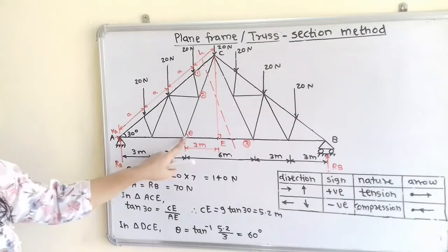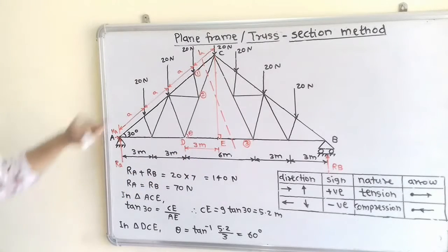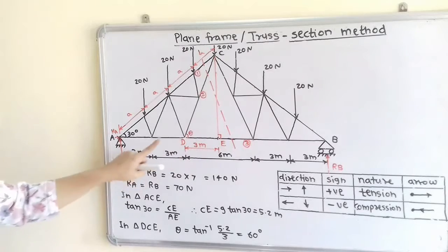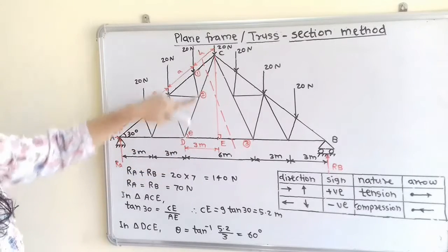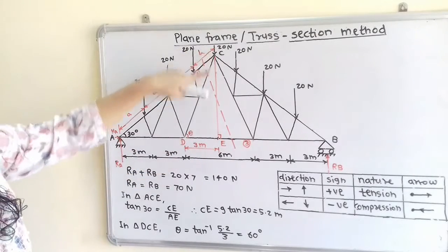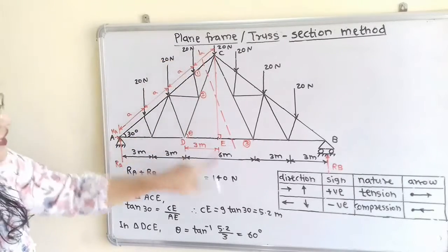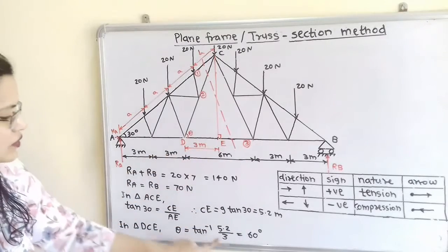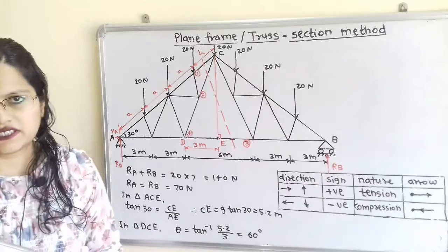Now we can find the unknown angle theta using triangle CED. Theta equals tan inverse of CE divided by DE, where CE equals 5.2 and DE equals 3. Therefore, theta equals 60 degrees.